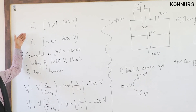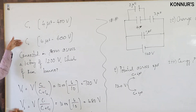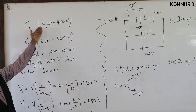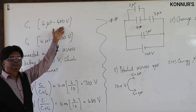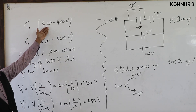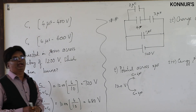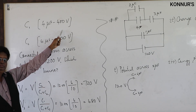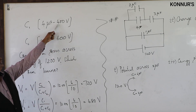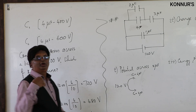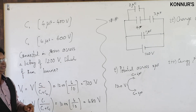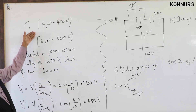Two capacitors C1 and C2 are given with ratings: C1 is 4 microfarad, 400 volts — meaning it has a capacity of 4 microfarad and can withstand a maximum of 400 volts. That is the voltage rating. If it exceeds 400 volts, the capacitor will burn.